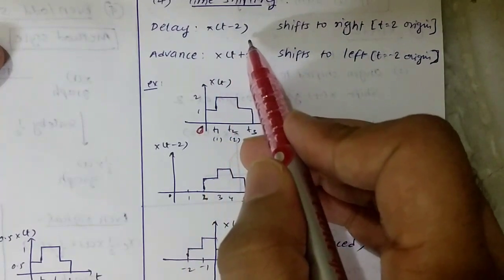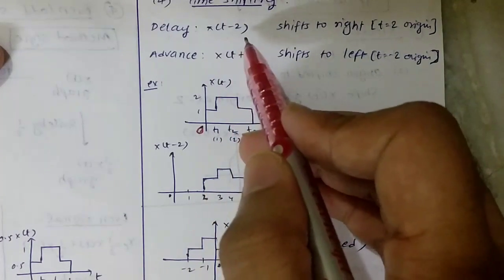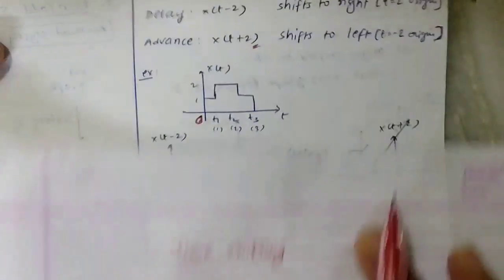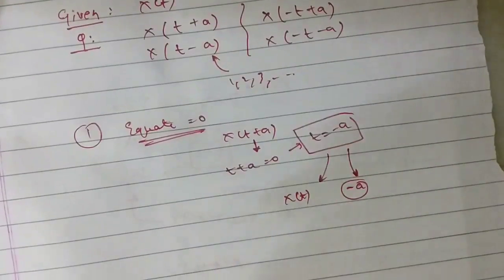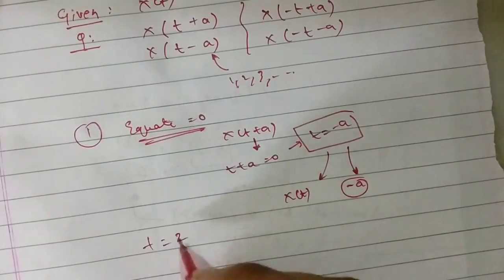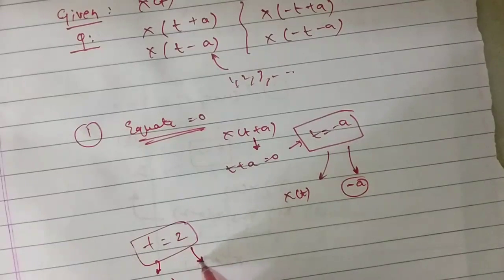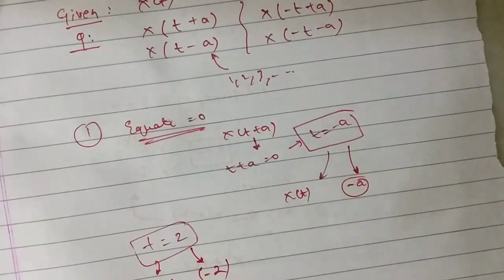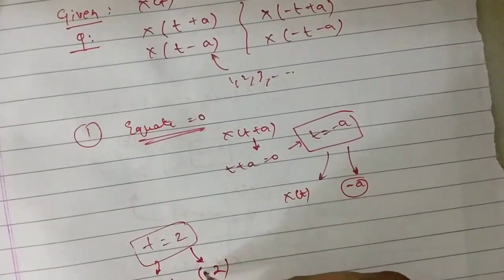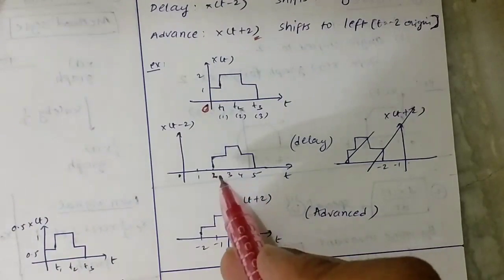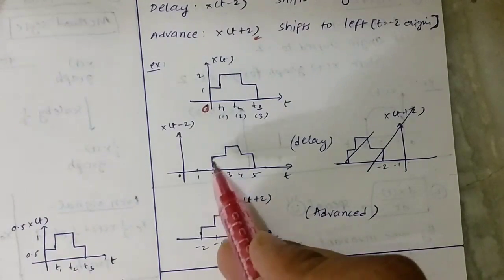Similarly, for X(t-2), equating t-2 = 0 gives t = 2. This means we draw the X(t) graph and the origin should be at +2. You can see the origin is now at +2 and the graph shape is the same.